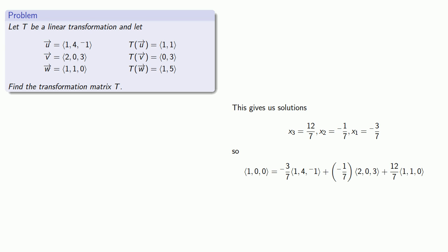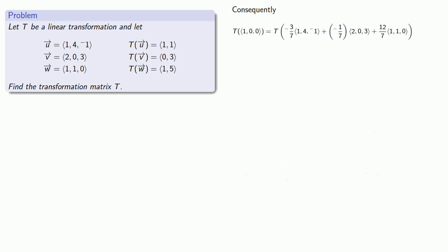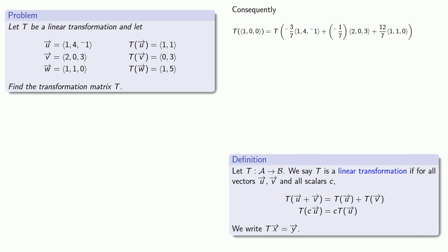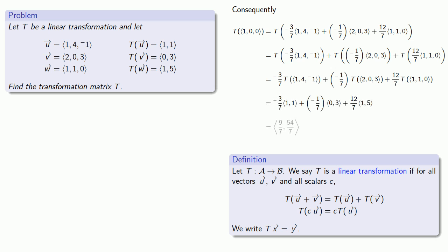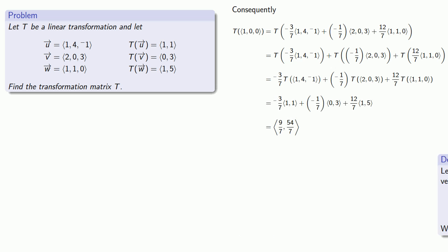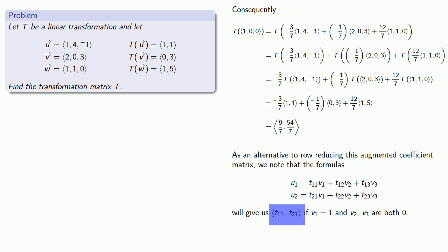So first I'll express (1, 0, 0) as our linear combination of the vectors U, V, and W, and then use the properties of a linear transformation to evaluate what that transformation result is going to be. And so the components of this vector are going to correspond to the entries of the first column of our transformation matrix.